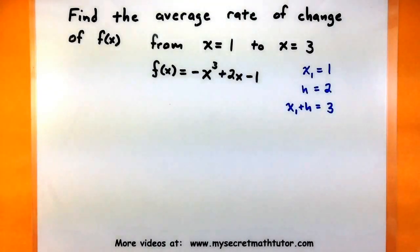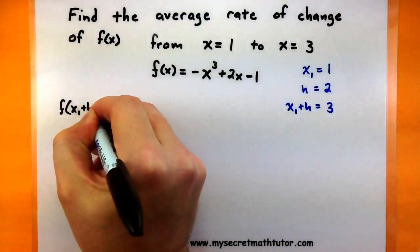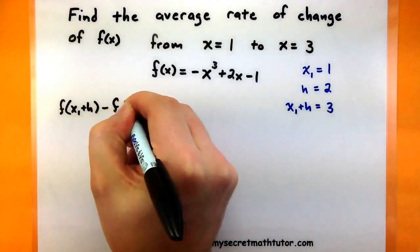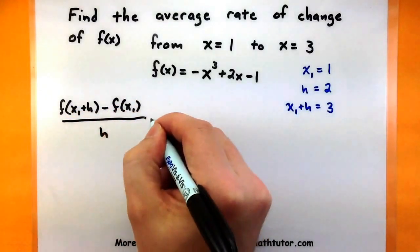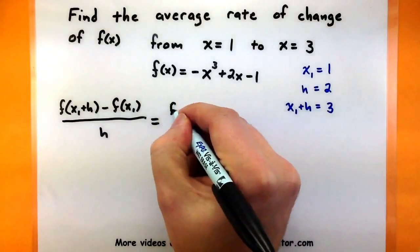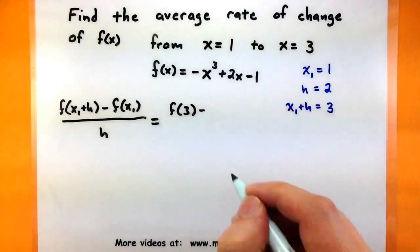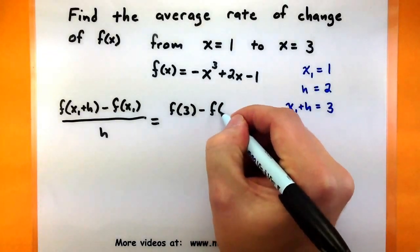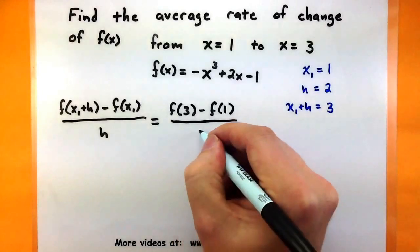Let's write down the difference quotient and then plug in all of these particular points. I'm looking at f(x₁ + h) - f(x₁) all over h. x₁ + h is 3, so I'll need to plug 3 into my function. x₁ is 1, so I will plug 1 into the function, and of course, I'll look at all of this over 2.